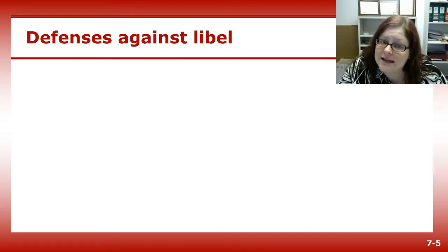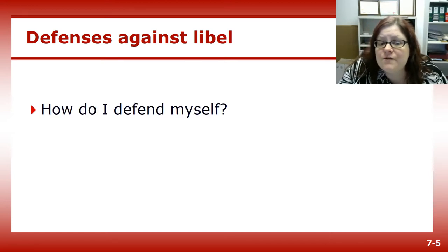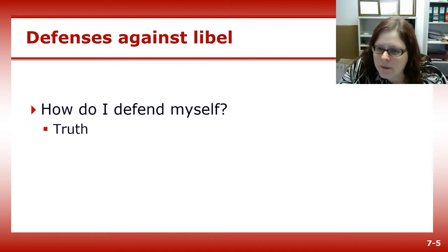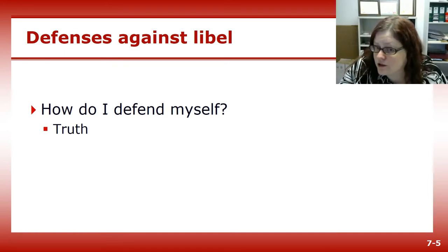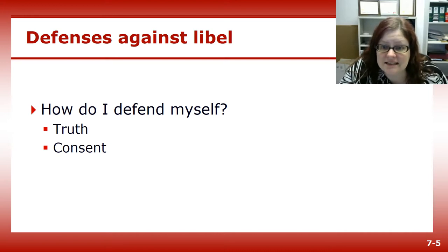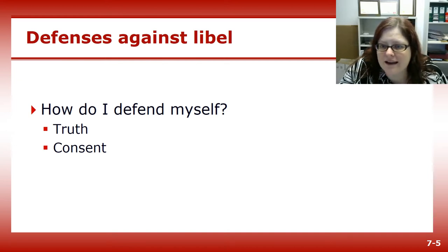Now that you know what libel is, how do you defend yourself and your publication? The best defense against libel is the truth — the provable, verifiable, undisputed truth. It's up to the plaintiff, that's the person suing you, to prove that what you wrote is false. Another defense is consent: if someone gave you permission to print the statement, the source can't go back and sue you later saying you didn't have permission.